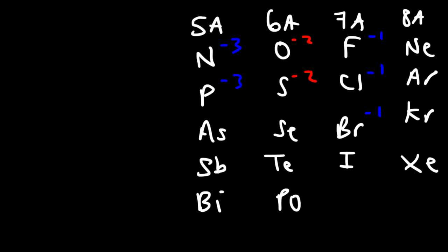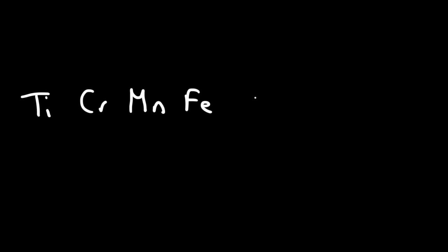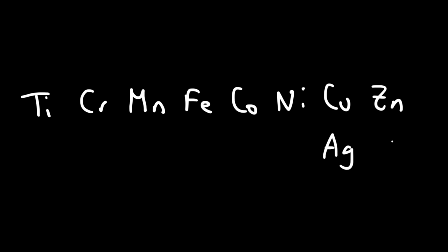From group 3 to 12 you have the transition metals. Some common ones include Ti (titanium), Cr (chromium), Mn (manganese), Fe (iron), Co (cobalt), Ni (nickel), Cu (copper), Zn (zinc), Ag (silver), Cd (cadmium), Hg (mercury), and Au (gold).